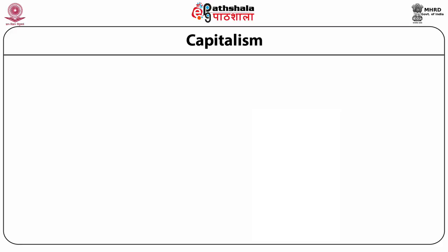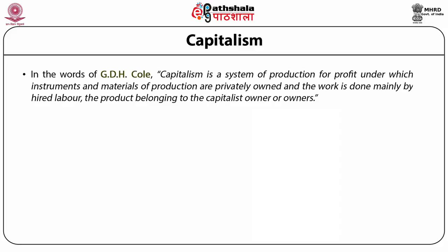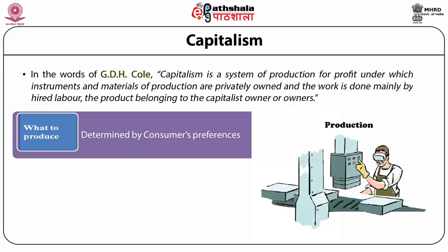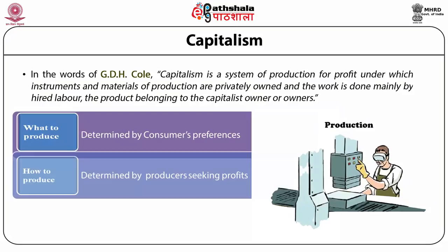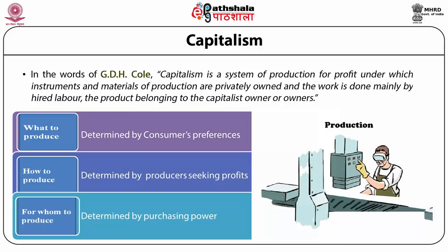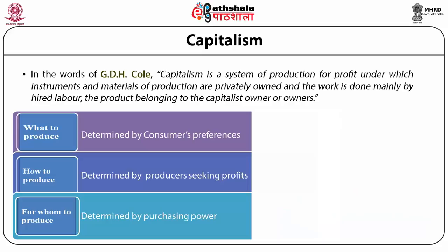The first type of economic system is capitalism. In the words of G.D.H. Cole, capitalism is a system of production for profit under which instruments and materials of production are privately owned and the work is done mainly by hired labor, the product belonging to the capitalist owner. The three basic questions in capitalism: 'what to produce' is determined by the preferences of consumers; 'how to produce' is determined by the producers who are going to earn the profits; and 'for whom to produce' is determined by the purchasing power of the people — whoever can buy the product will use it.